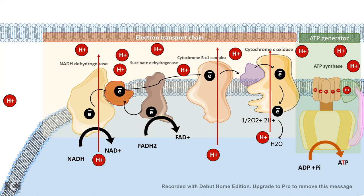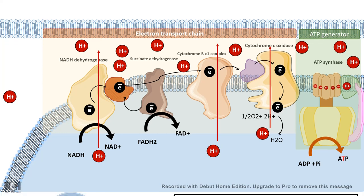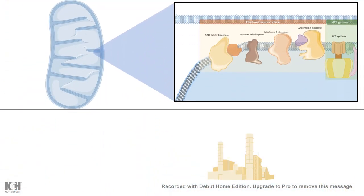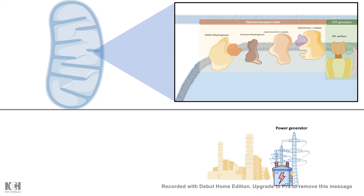So the electron transport chain and ATP generation mechanism are interlinked and dependent on each other. There are two phases of ATP generation: the electron transport chain, which is like a fuel combustion unit in an electrical plant, and the ATP synthase complex, which acts as the power generator. Both have different functions but neither can work without the other.